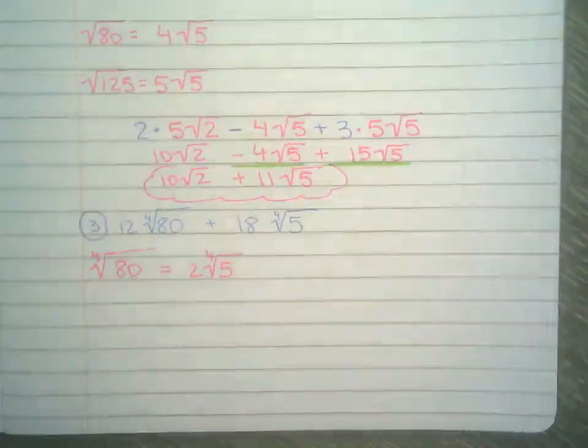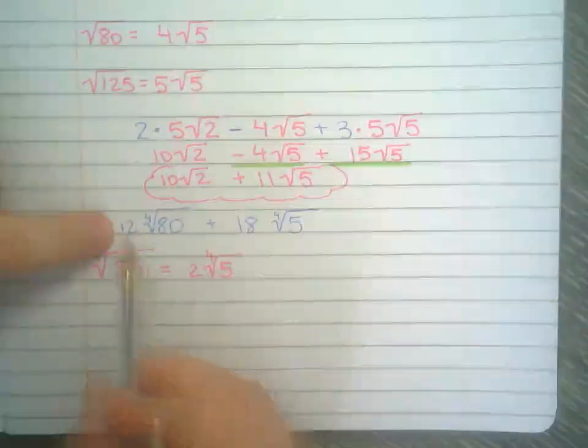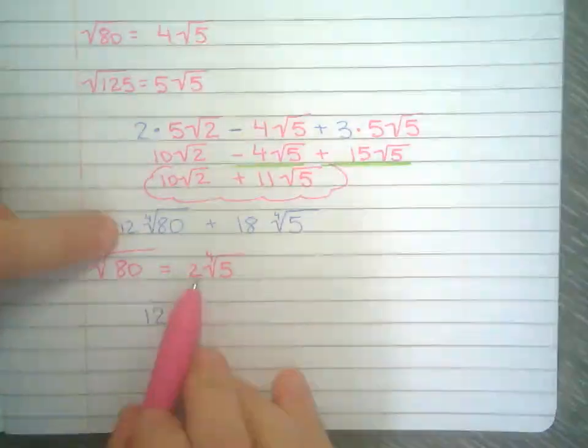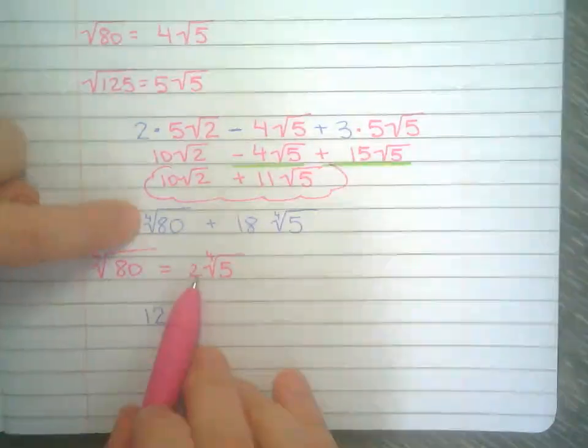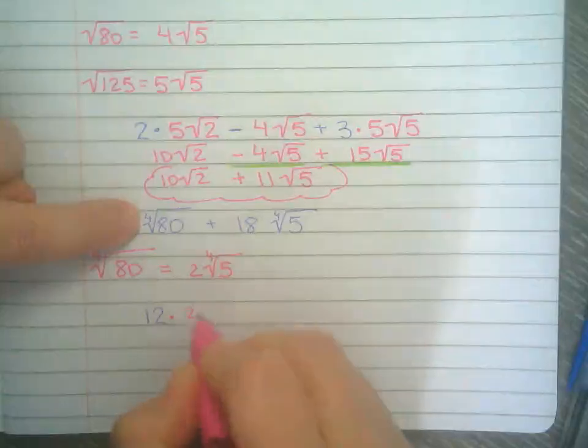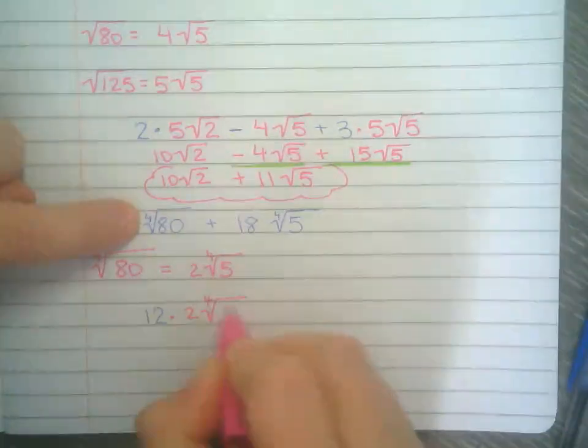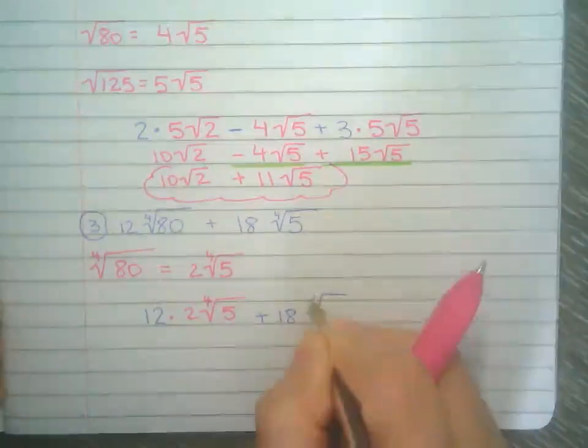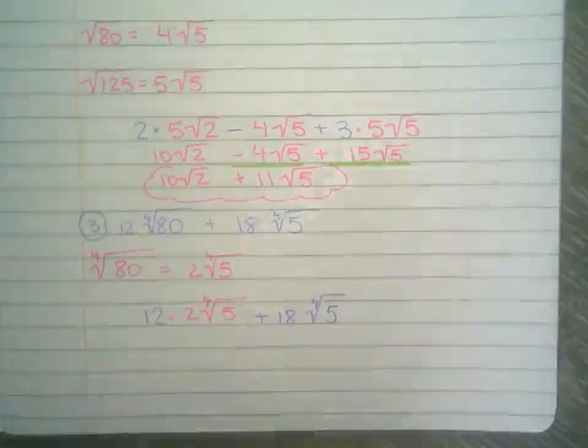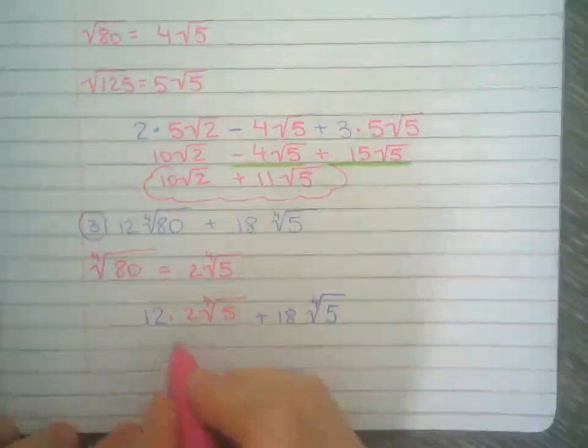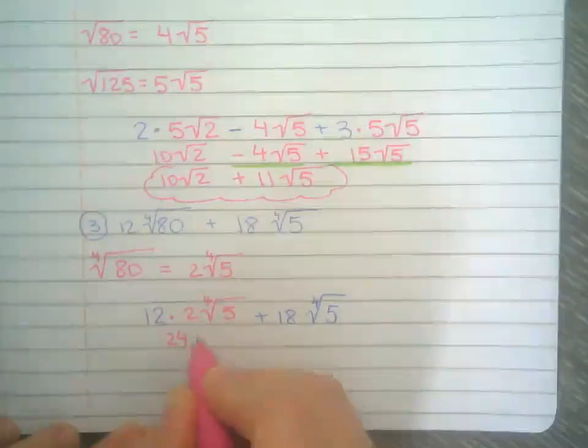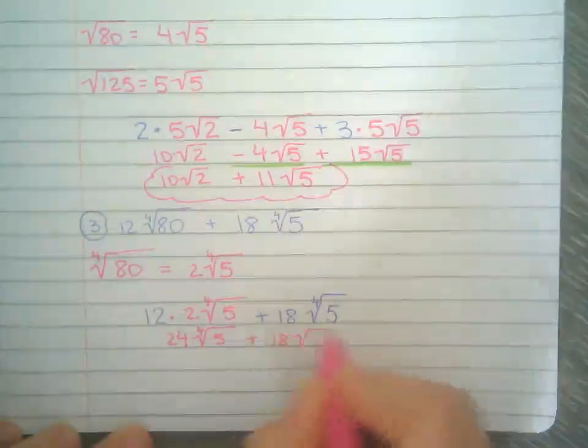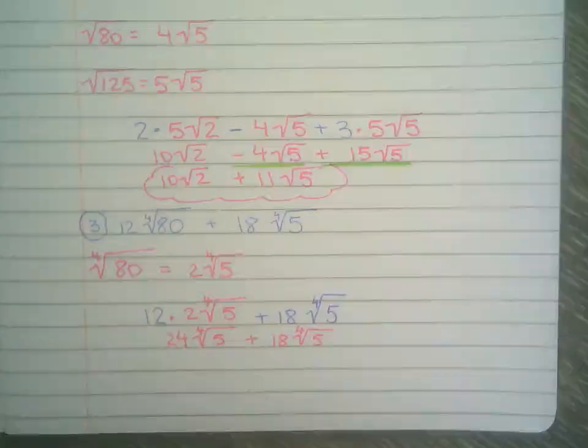I'm going to rewrite this thing. So 12 right there from the question, times—I'm simplifying—4th root of 80 is the same thing as 2 times the 4th root of 5. Plus 18 times the 4th root of 5. Alright, I'm going to multiply there.